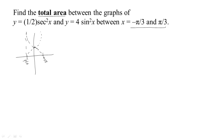Now if we square the secant, it's going to flatten out a little bit here, giving a shape like this. Then we multiply by ½, which drops the shape down further. So it cuts our shape down — and there's the graph of ½sec²x.